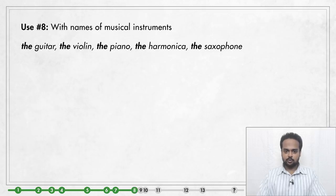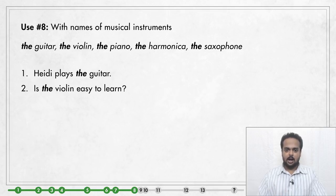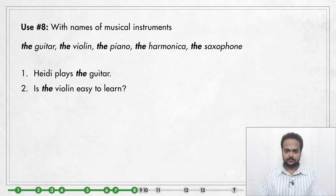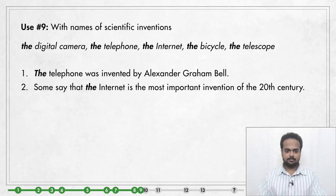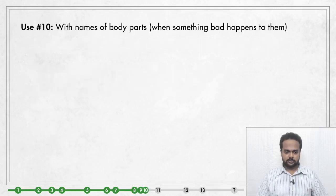Use number eight: use 'the' with names of musical instruments. We say 'the guitar,' 'the violin,' 'the piano,' 'the saxophone,' and so on. For example: 'Heidi plays the guitar' or 'Is the violin easy to learn?' Similarly, to talk about scientific inventions we often use 'the' — for example: 'The telephone was invented by Alexander Graham Bell' and 'Some say that the internet is the most important invention of the 20th century.'